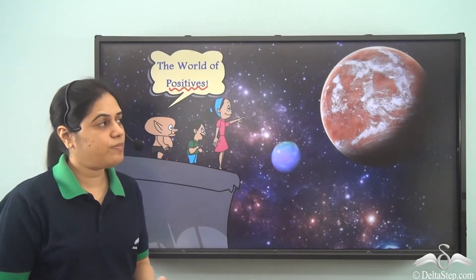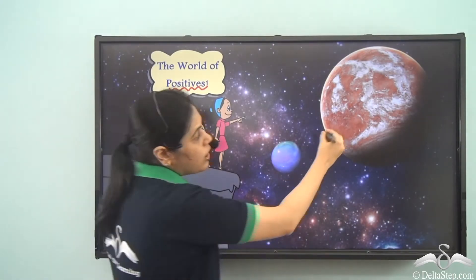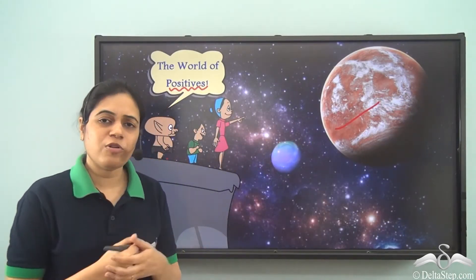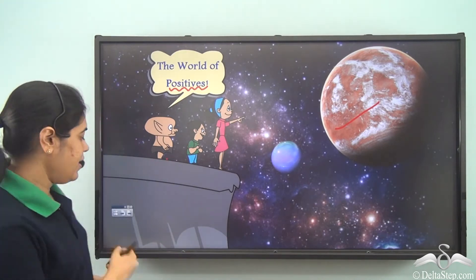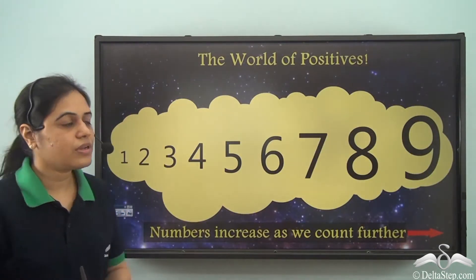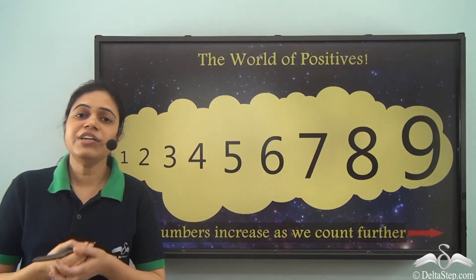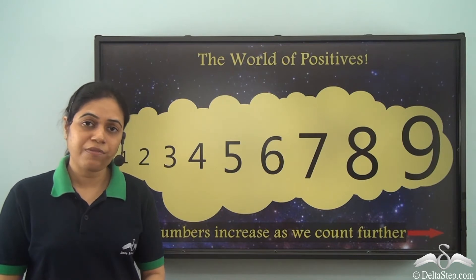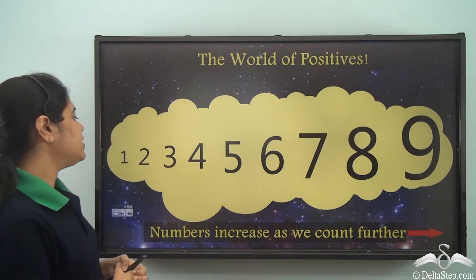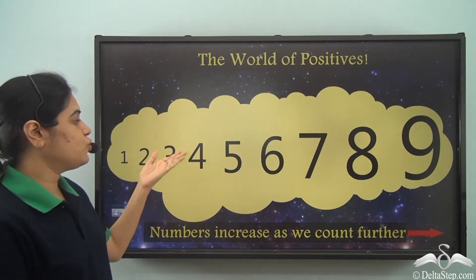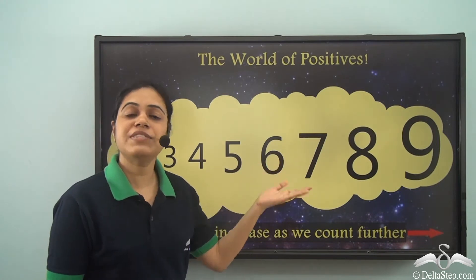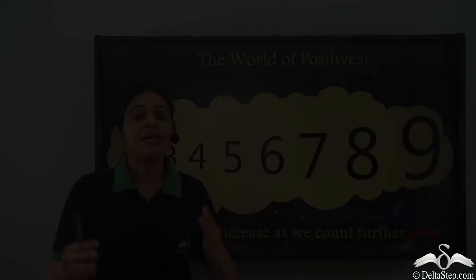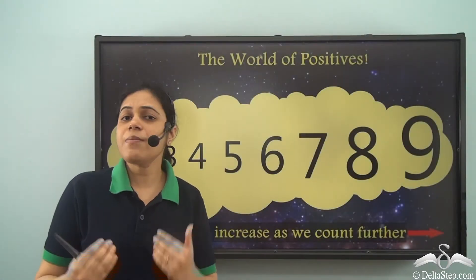Why is the goblin calling it the world of positives? Well, what are the different numbers that we know in our world? The numbers are 1, 2, 3, 4, 5, 6, 7 and so on. These are the numbers that we know till now.